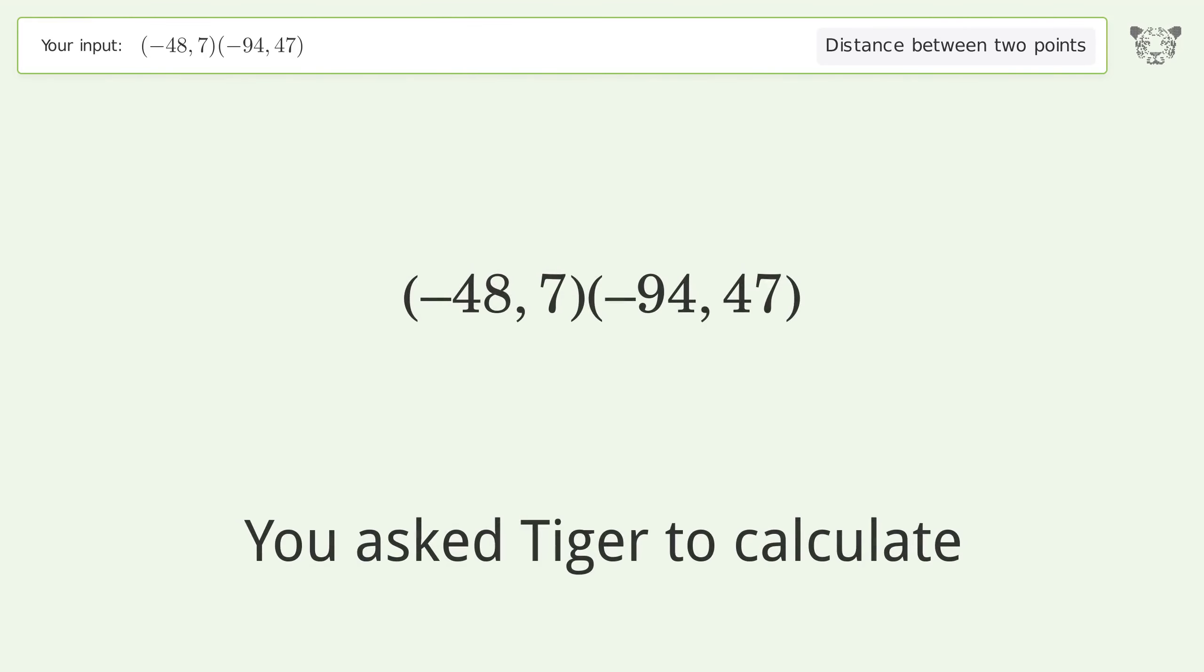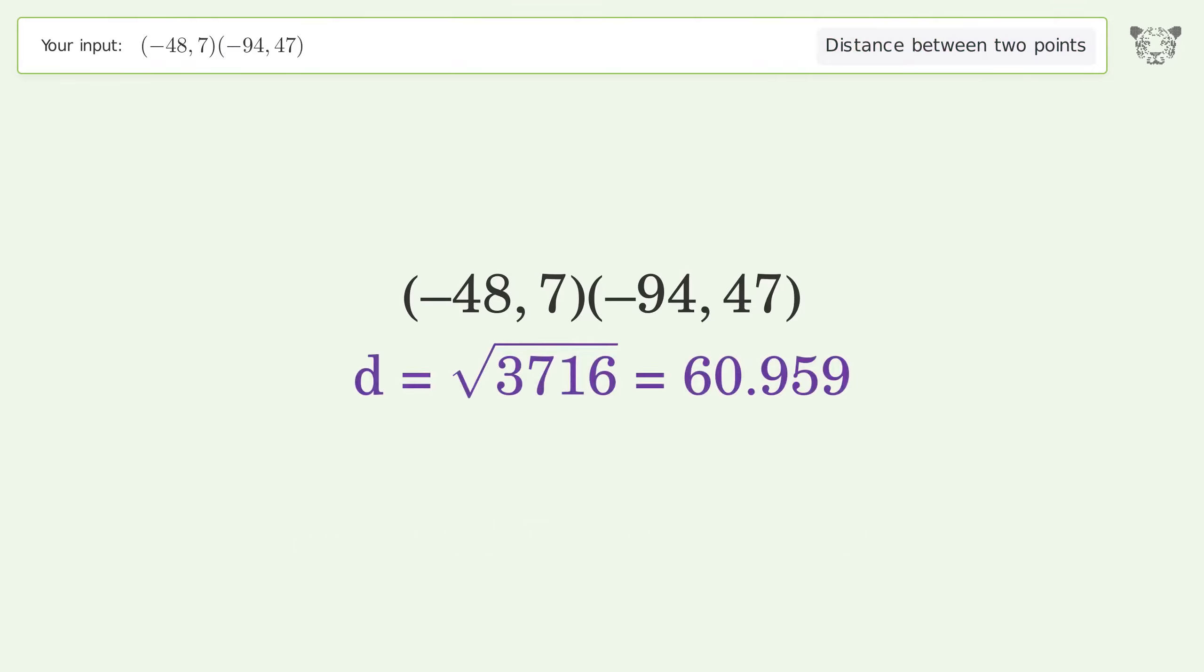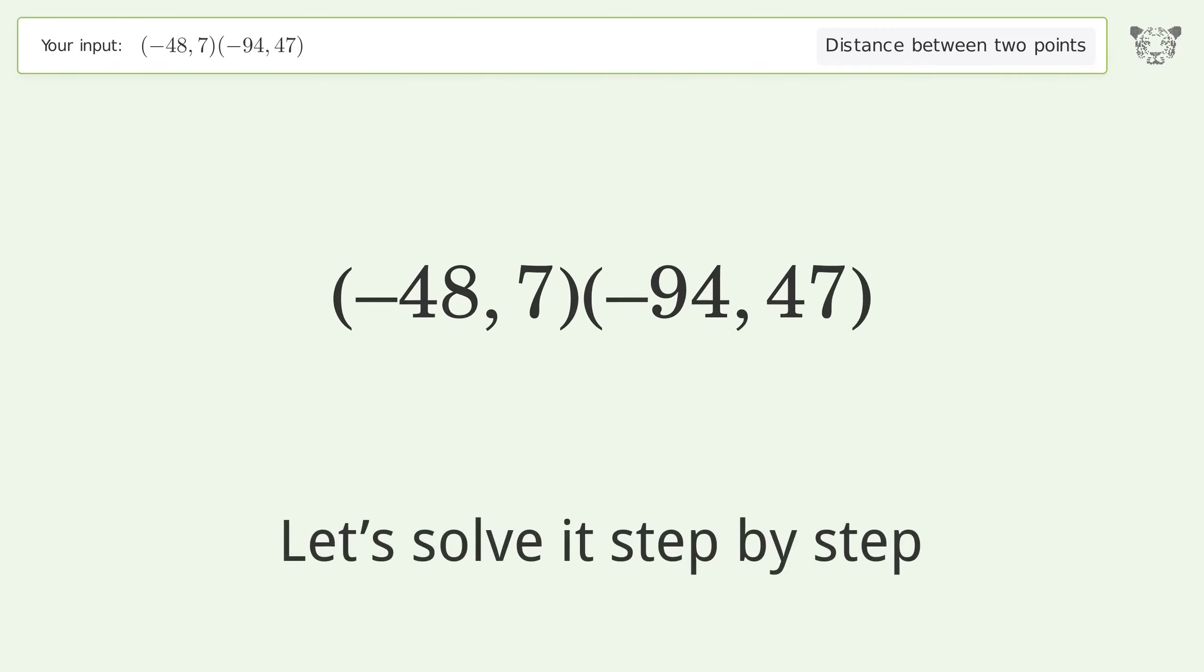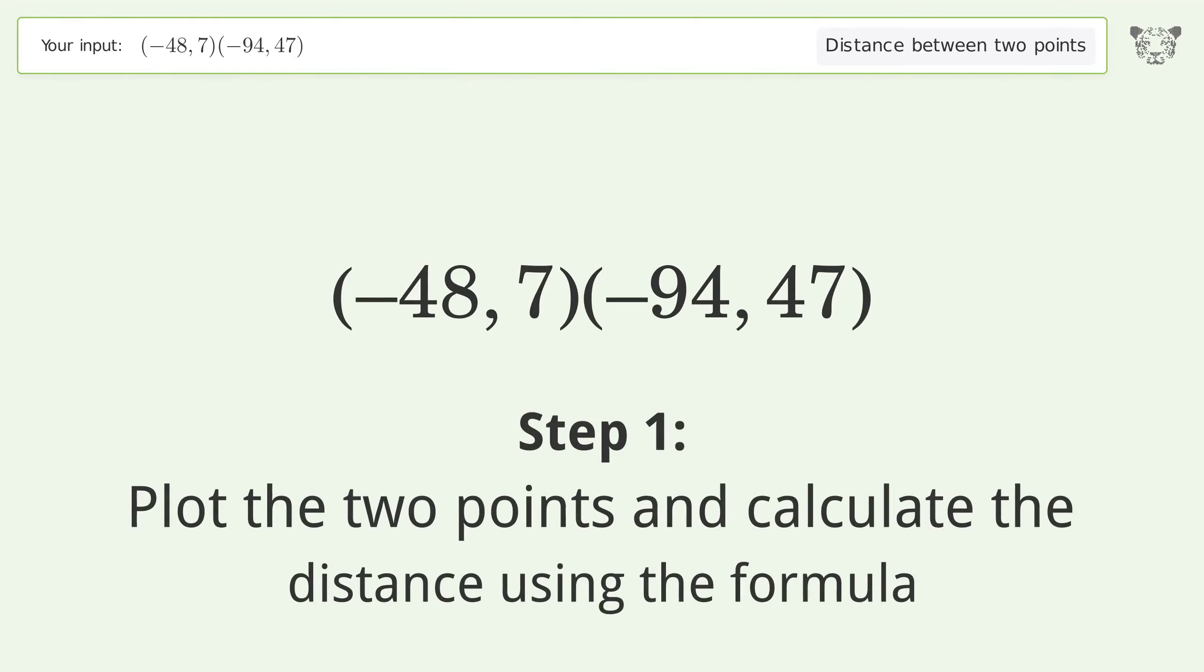You asked Tiger to calculate the distance between two points. The distance between the two points is the square root of 3716 or 60.959. Let's solve it step by step - plot the two points and calculate the distance using the formula.